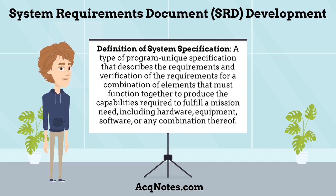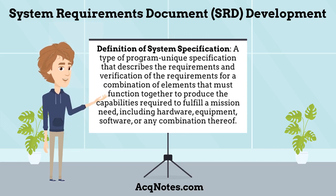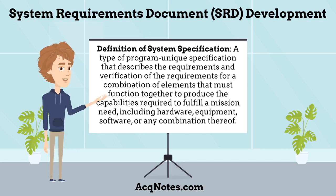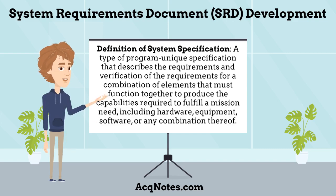The definition of system specification is a type of program-unique specification that describes the requirements and verification of the requirements for a combination of elements that must function together to produce the capabilities required to fulfill a mission need, including hardware, equipment, software, or any combination thereof.